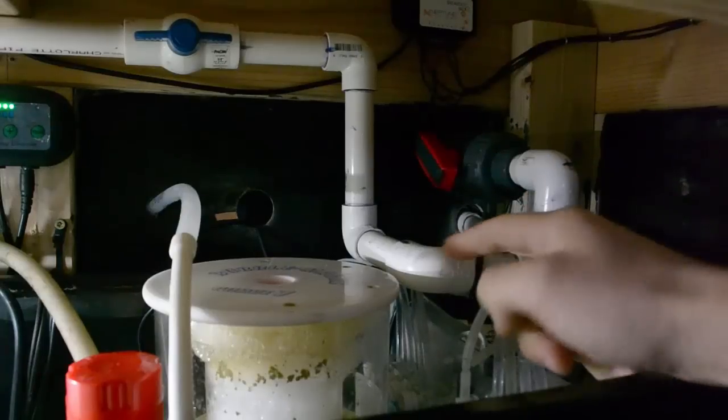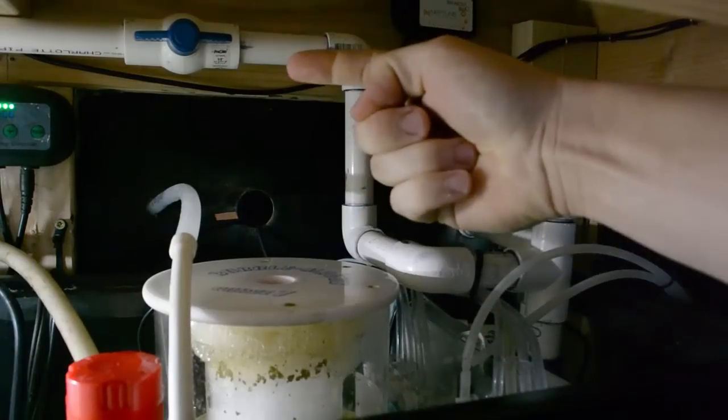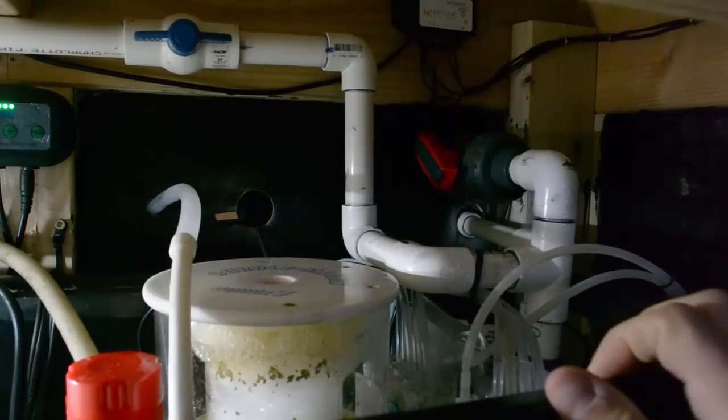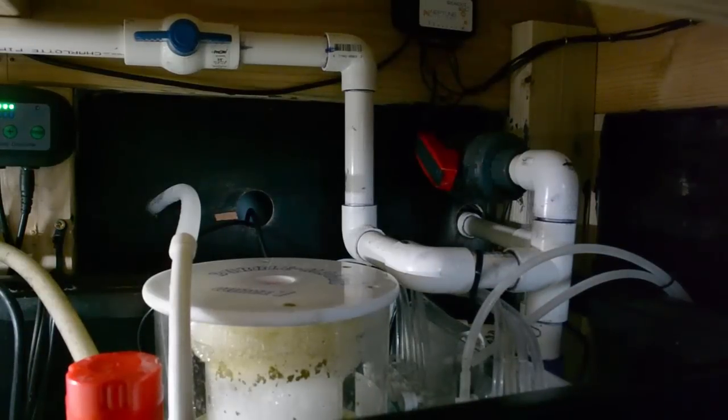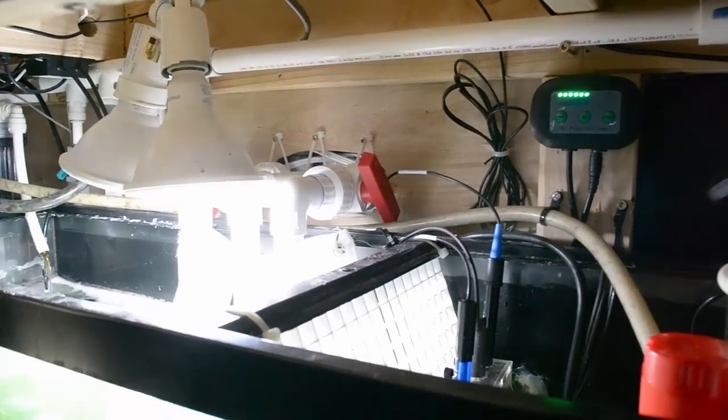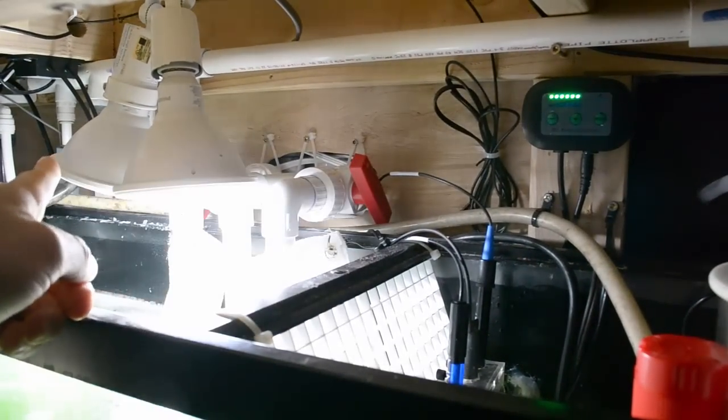Now, coming off the T-valve, we have it going up over to another ball valve which allows me to turn off the manifold when I need to do any kind of maintenance. So let me see if I can move this over. Lights are in the way. As you can see, it runs all the way across.